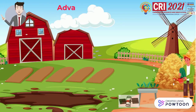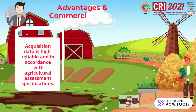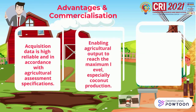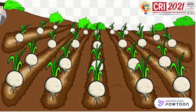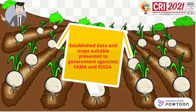The advantages and commercialization of this research are: first, acquisition data is highly reliable and in accordance with agriculture assessment specification; second, enabling agriculture output to reach the maximum level, especially coconut production; and lastly, the latest control method to determine soil and tree health does not require conventional methods. The data maps are also suitable to be presented to government agencies like FELDA and RISDA.